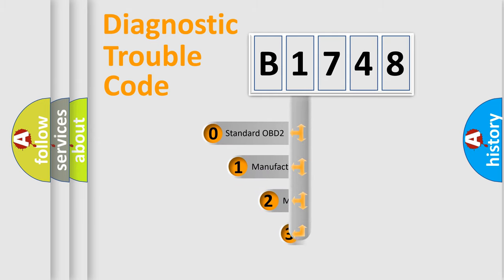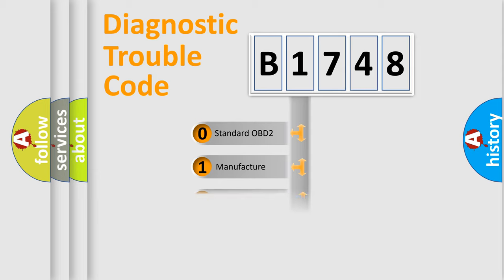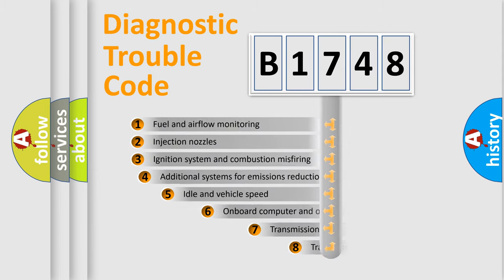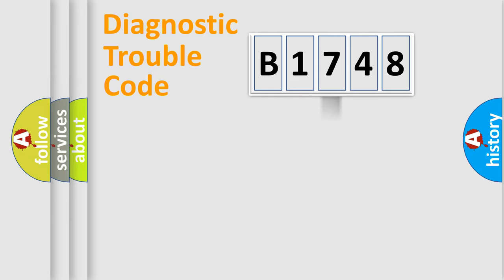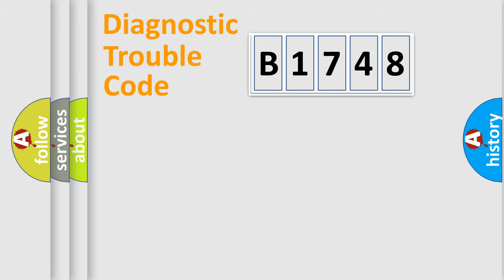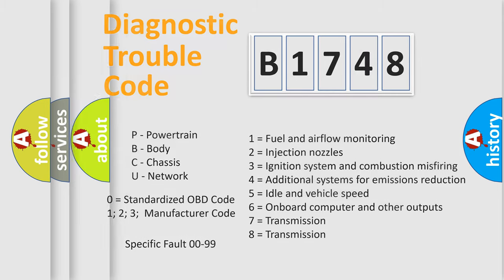This distribution is defined in the first character of the code. If the second character is expressed as zero, it is a standardized error. In the case of numbers 1, 2, or 3, it is a manufacturer-specific error. The third character specifies a subset of errors. This distribution is valid only for the standardized DTC code, and only the last two characters define the specific fault of the group.